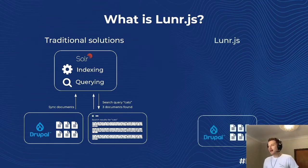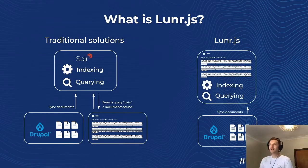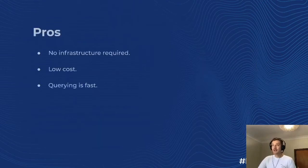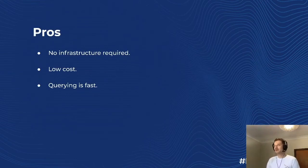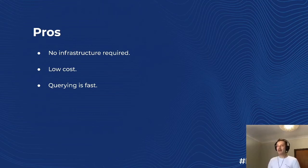With LunarJS, it's a little bit different. You still have your Drupal site with your content, but instead of syncing it to an external search index, you actually send it to the user's browser. A JavaScript library running in the user's browser takes care of the indexing and the querying. So LunarJS is the JavaScript library that enables this kind of functionality. There are a couple of pros: less infrastructure is required — you don't need to maintain an external search server like Solr — and querying the index is really fast since it all happens within the browser.